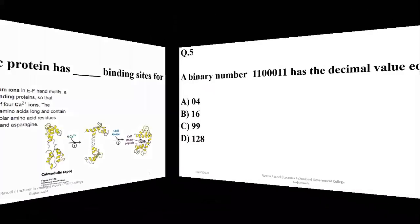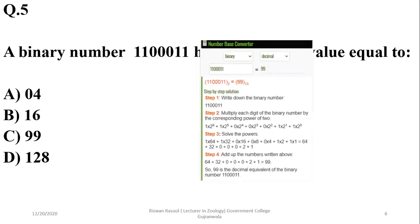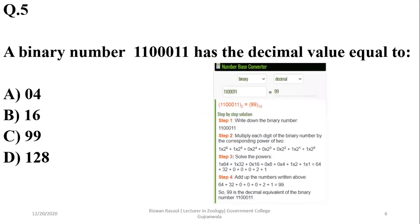Question 5: A binary number has a decimal value equal to it — this is a general knowledge question. It is equal to 99, so the right option is C.